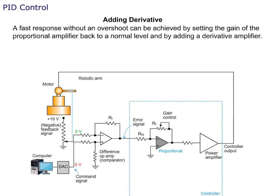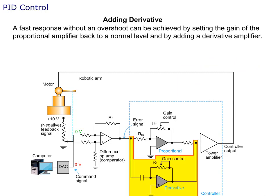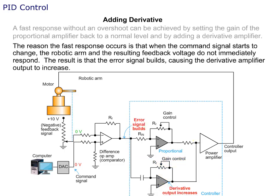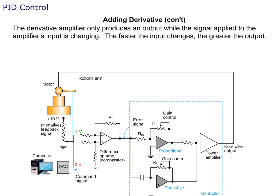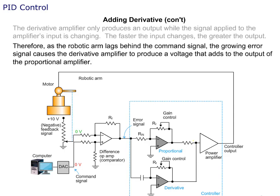A fast response without an overshoot can be achieved by setting the gain of the proportional amplifier back to a normal level and by adding a derivative amplifier. When the command signal starts to change, the robotic arm and the resulting feedback voltage do not immediately respond. The result is that the error signal builds, causing the derivative amplifier output to increase. The derivative amplifier only produces an output while the signal applied to its input is changing — the faster the input changes, the greater the output. Therefore, as the robotic arm lags behind the command signal, the growing error signal causes the derivative amplifier to produce a voltage that adds to the output of the proportional amplifier.